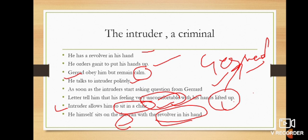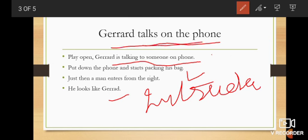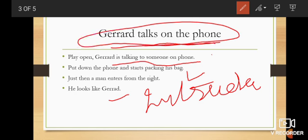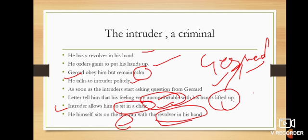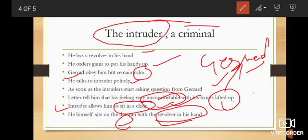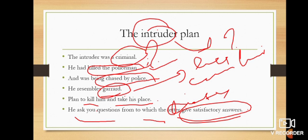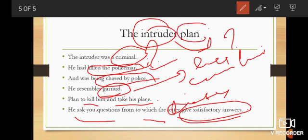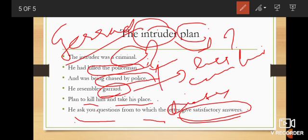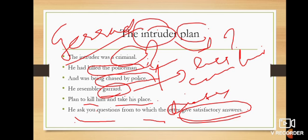Till now we have covered three things. First, Gerrard talking on the phone when the intruder enters. Second, the intruder is a criminal who killed a policeman. Third, the intruder's plan: to kill Gerrard and take his place in the house because he resembles him, allowing him to hide from the police. This is how the first part of the chapter ends. Thank you students.